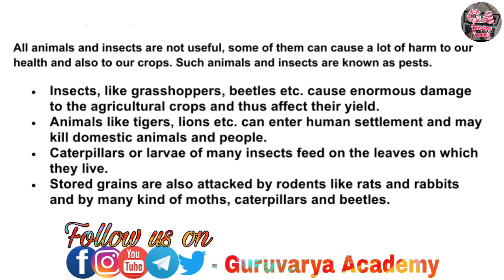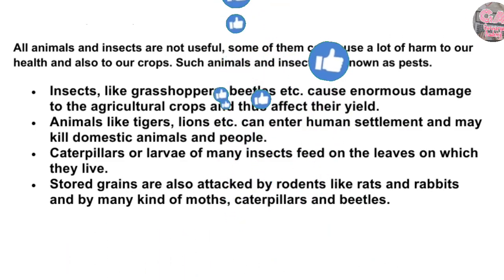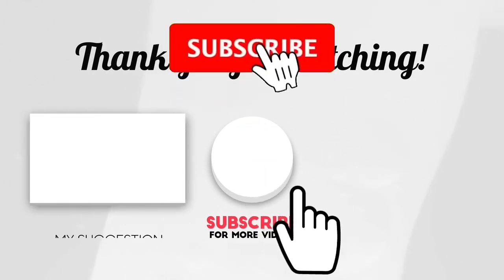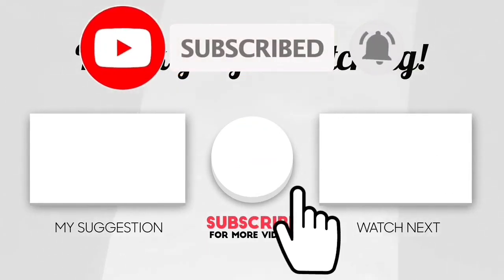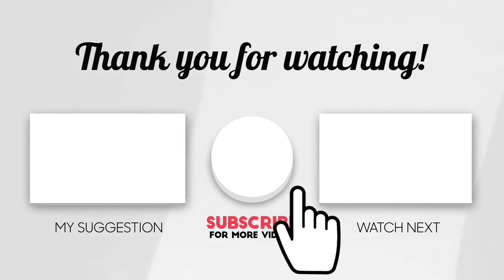Harmful animals: Not all animals and insects are useful — some cause great harm to our health and crops and are known as pests. Insects like grasshoppers and beetles cause enormous damage to agricultural crops. Animals like tigers and lions can enter human settlements and kill domestic animals and people. Caterpillars feed on leaves, and stored grains are attacked by rodents like rats and rabbits, as well as moths, caterpillars, and beetles. Thank you for watching — please subscribe to our channel, click the bell icon, and share the video.